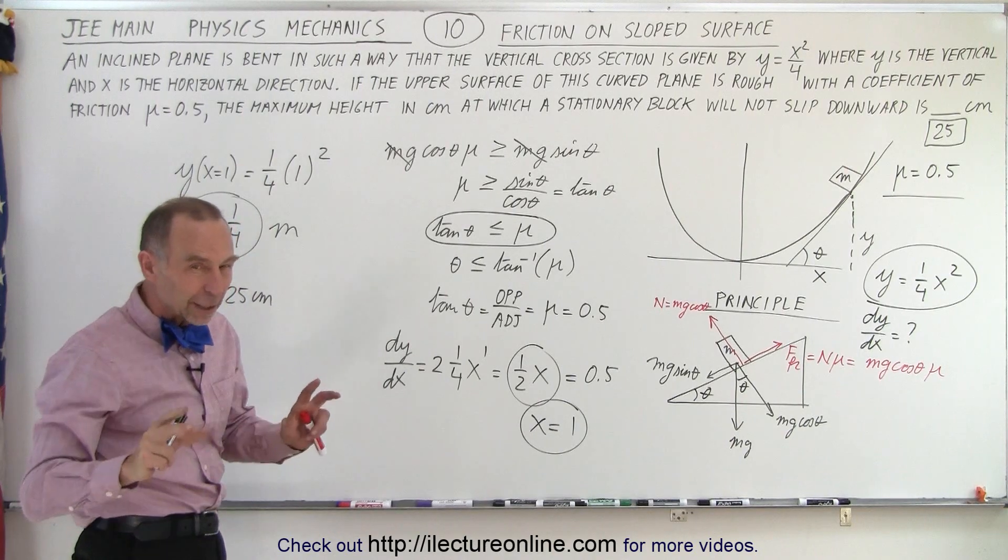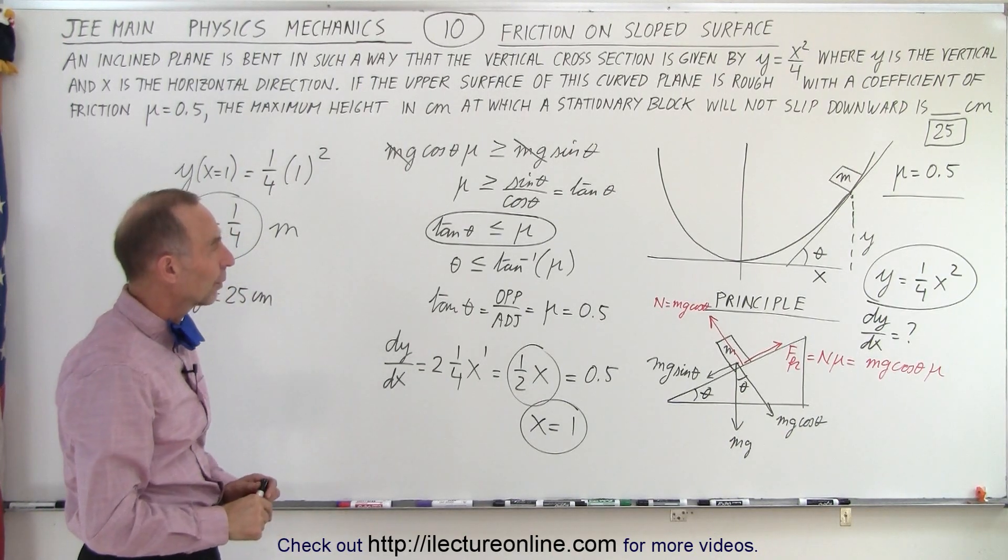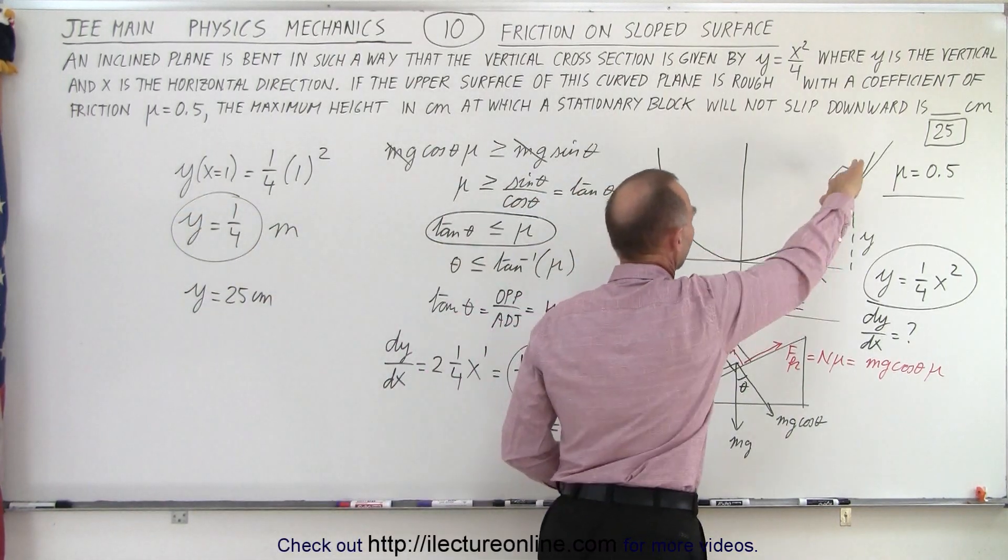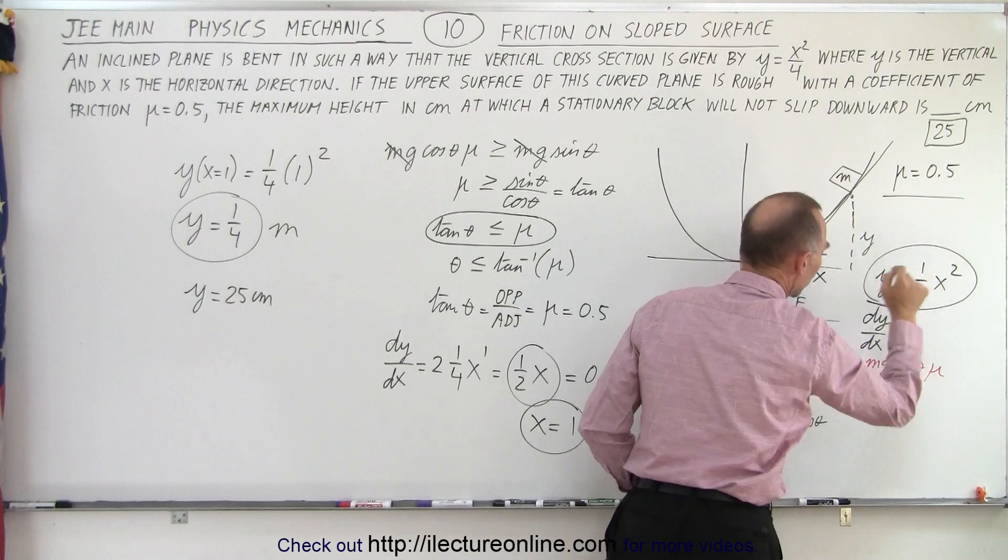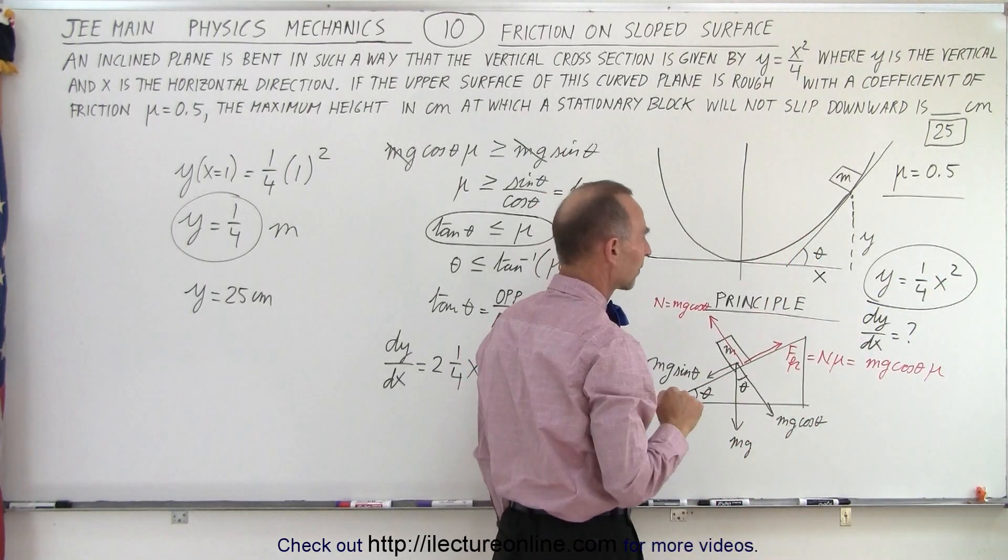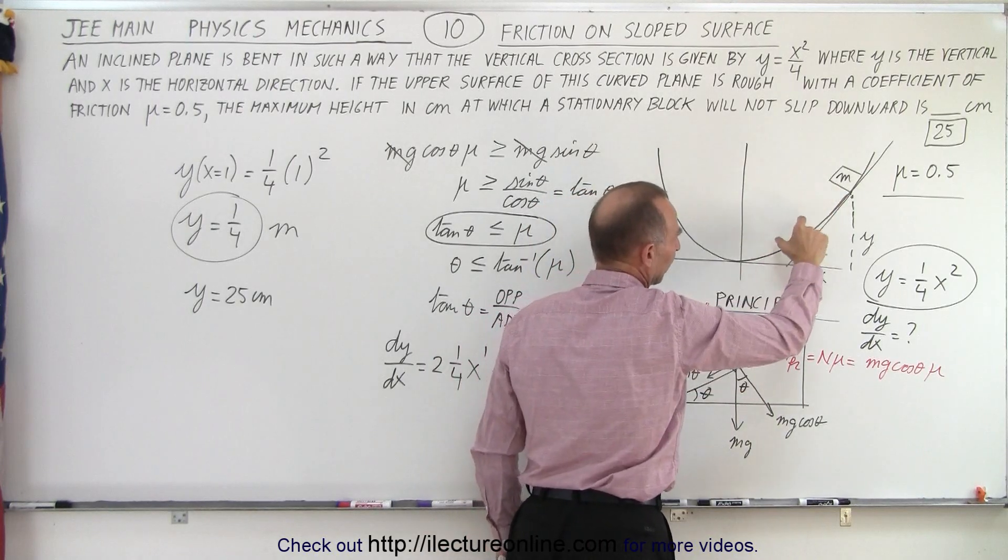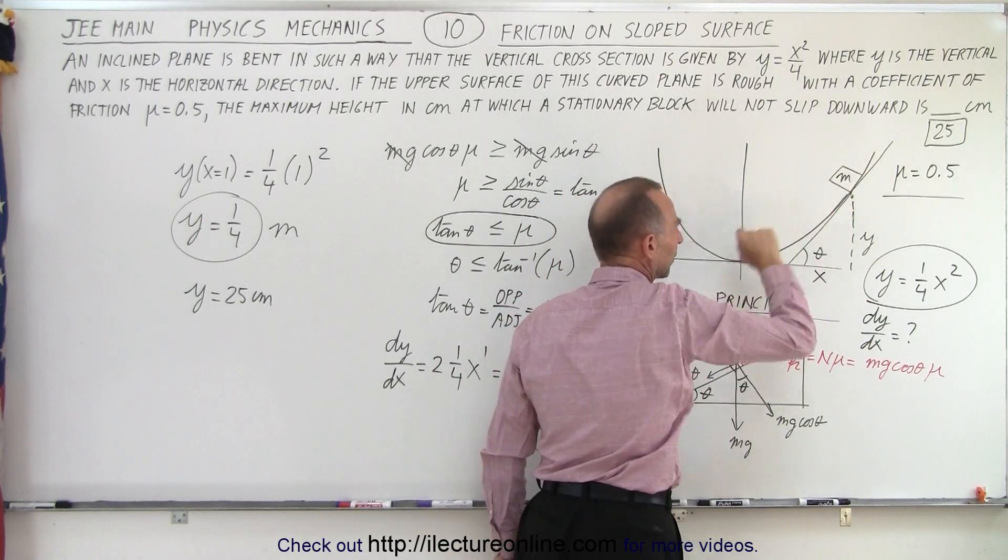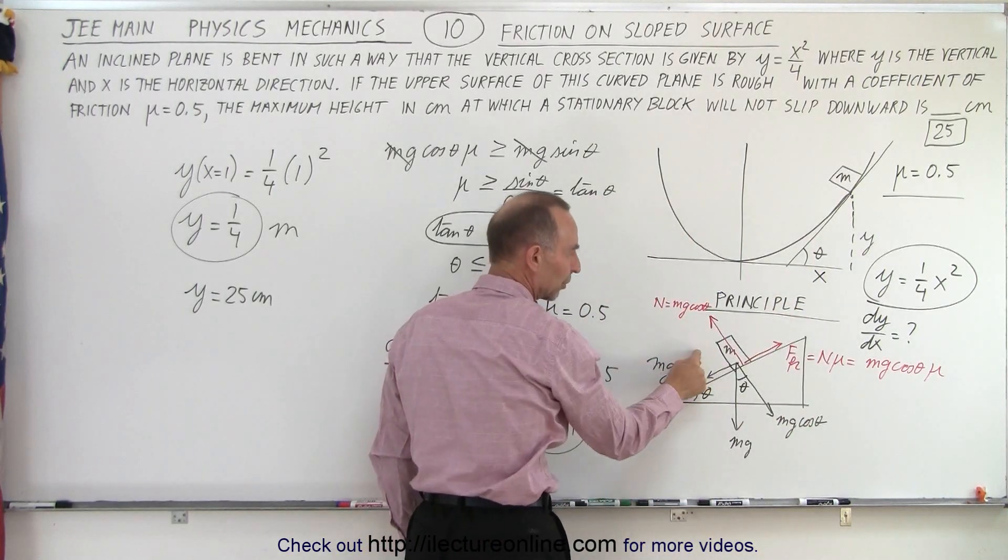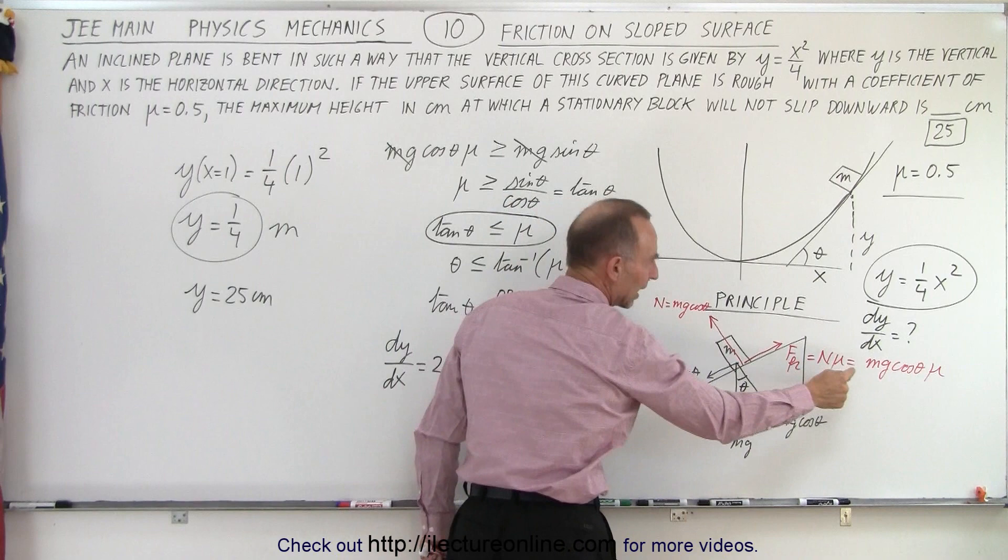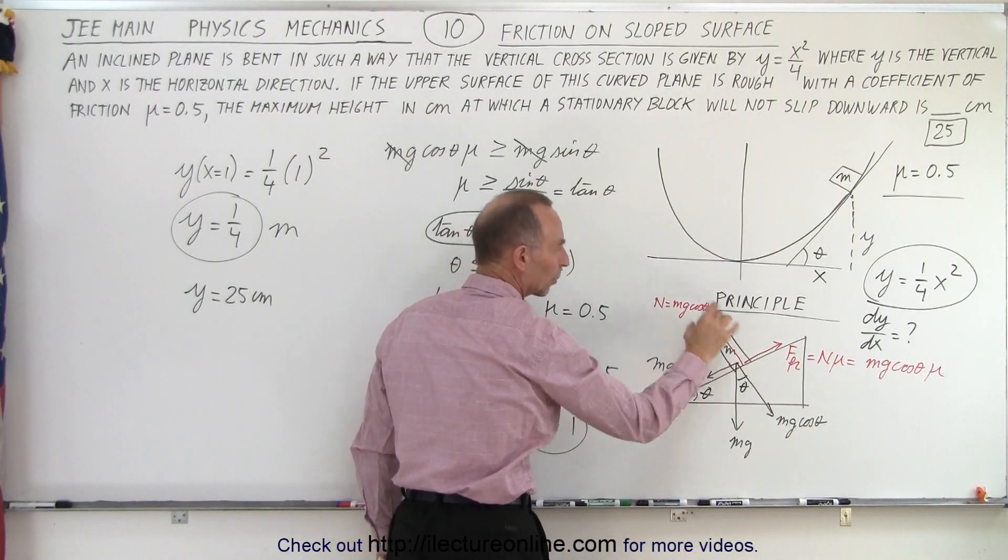So notice that this can get kind of convoluted, so let's go through it again to see what it says. We have a sloped surface according to the equation y equals one quarter x, one fourth x squared, and that's of course a parabola. We go to the principle: since there's a rough surface, if at some point it's too steep, the block will begin to slide down. But if it's not steep enough, the block will stay in place. So we use the principle that as long as the mg cosine theta mu is bigger than the mg sine theta, the block will stay in place.